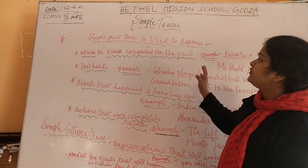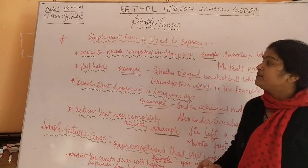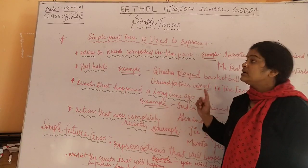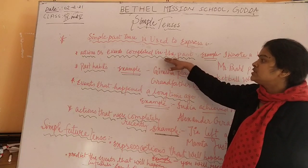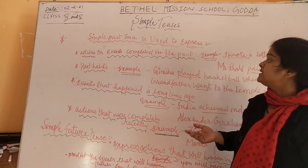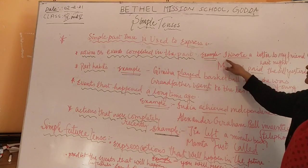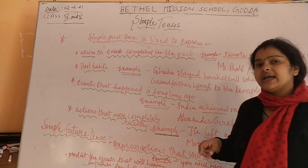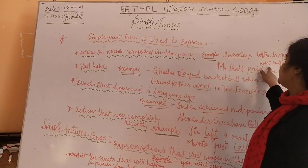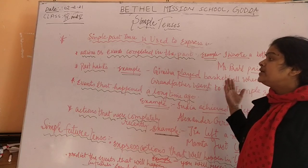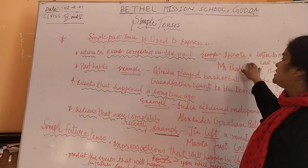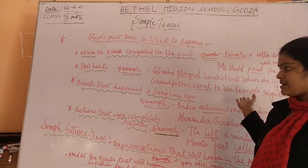Now I will explain where to use simple past tense. Simple past tense is used to express things or events completed in the past. For example, I wrote a letter to my friend last night — that means I have already written a letter in the past. It is a sentence which shows the action which has already taken place in the past tense.